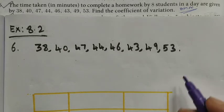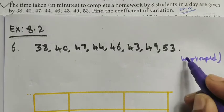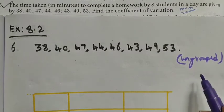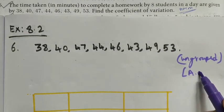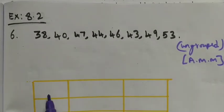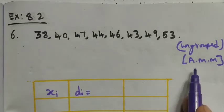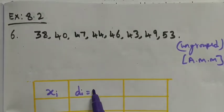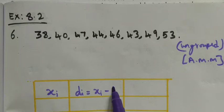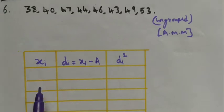The given data is ungrouped data. We are using the assumed mean method to solve this. In the assumed mean method, the given data is xi, the deviation is di = xi minus a, and then we find di squared.